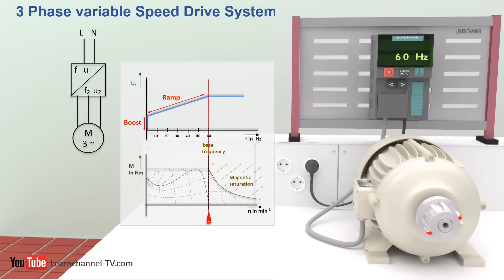The parameter called Ramp describes the voltage-frequency ratio. The other parameter, Boost, also known as Torque Compensation, is to compensate the torque decrease at low speed because of the stator winding resistance of the electric motor and the starting torque caused by friction.